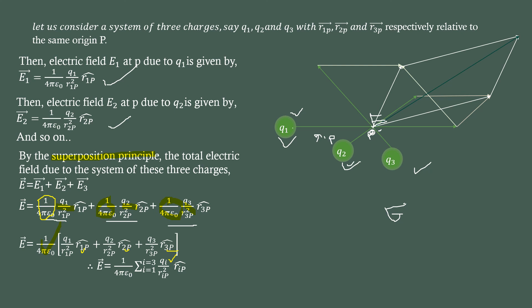So the summation is equal to E is equal to 1 by 4 pi epsilon naught, summation i is equal to 1 to 3. Three charge particles, i equal to 1 to 3, I will add qi by ri square.